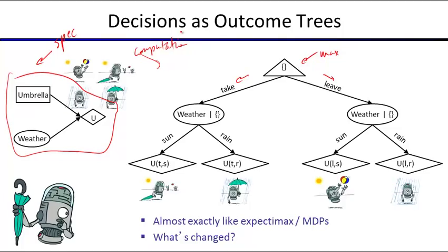What's different from what we've done before is that we're now going to account for evidence. We're already being explicit that we could in principle account for it. If you look at the chance node, we annotate it with the name of a random variable and with the evidence that will be available at the time that chance node kicks in. In this case we have no evidence, so we have an empty set being propagated down. But if there were some evidence — let's say the forecast — then that would be in that set and you'd have information about what the forecast would be.